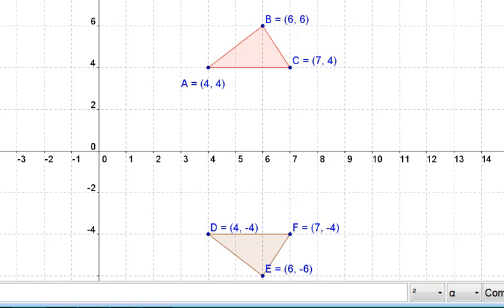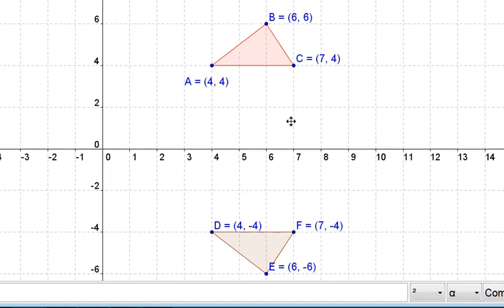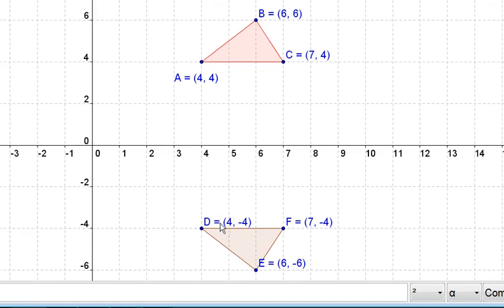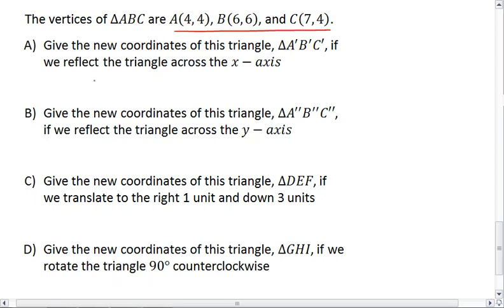So for A, we have (4,4), and for A prime, or in this case D, we have (4, negative 4). But the y-coordinate gets flipped, so it's negative. Which means we can say that our ordered pairs (x,y) are transformed to (x, negative y).